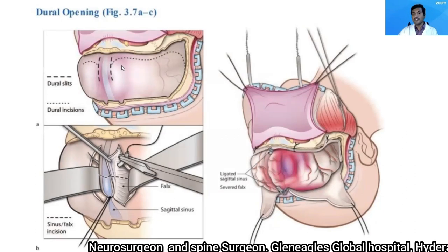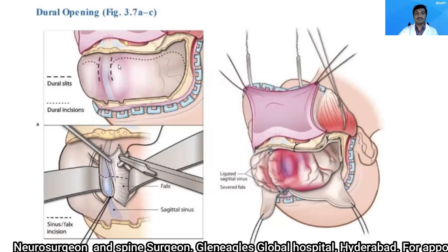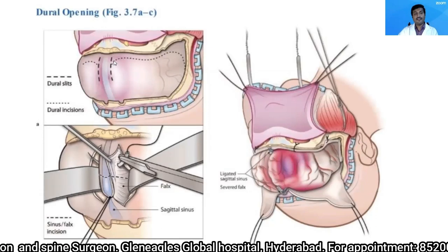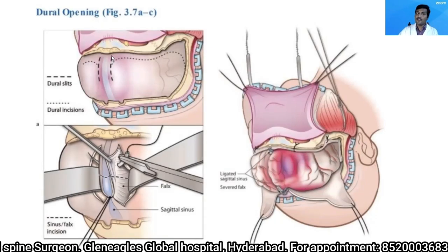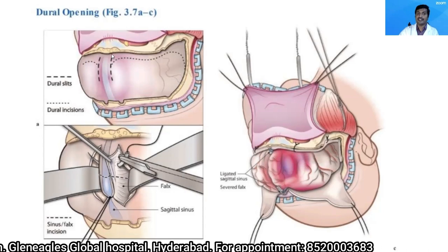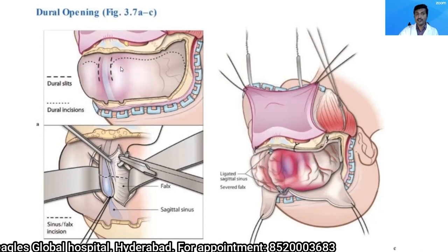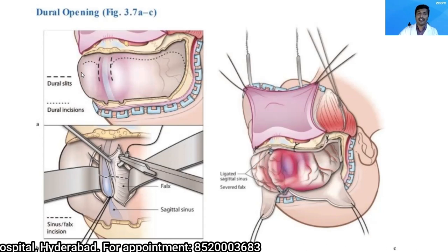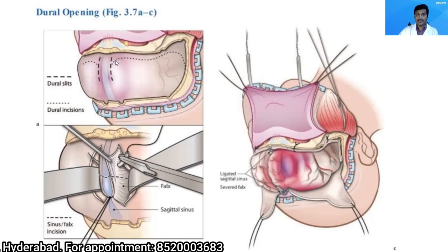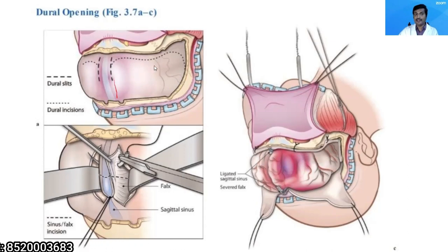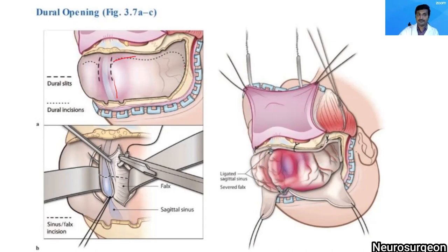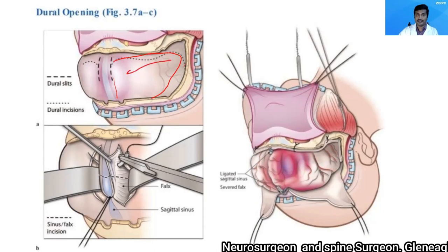Now open the dura mater. If there is no intention of cutting the superior sagittal sinus, you can raise dural flaps on either side with the base on the midline — opening and reflecting the dura medially on both sides.